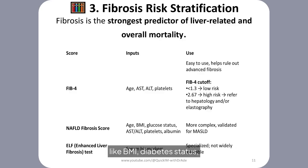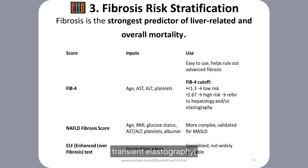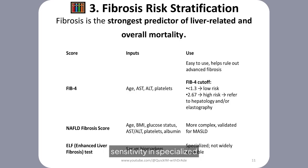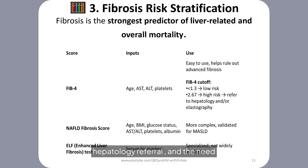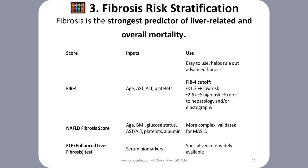The NAFLD Fibrosis Score, NFS, incorporates additional variables like BMI, diabetes status, albumin, and the AST/ALT ratio, offering another reliable method to stratify patients. Transient elastography, FibroScan, measures liver stiffness and helps correlate with Metavir fibrosis stages, while MR elastography and shear wave ultrasound provide higher sensitivity in specialized settings. Together, these tools help guide decisions on monitoring frequency, hepatology referral, and the need for liver biopsy. Early identification of high-risk patients can significantly improve outcomes in MASLD management.